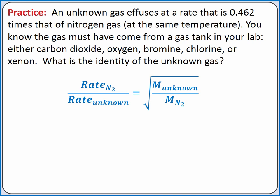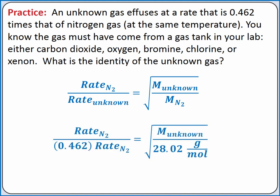In the problem, we're told the rate of effusion for the unknown gas is 0.462 times that of nitrogen gas, so we can replace the rate of effusion for the unknown gas with 0.462 times the rate of effusion for nitrogen gas. We can also substitute in the molar mass for nitrogen.